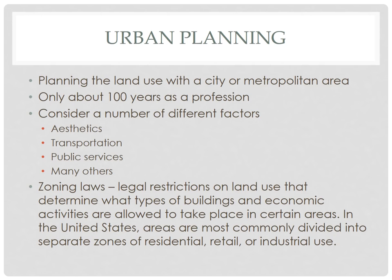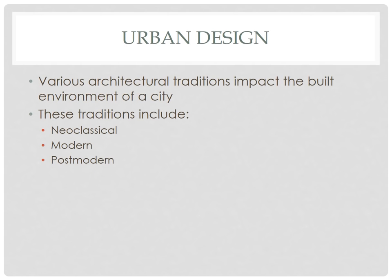This leads to one of our vocabulary terms: zoning laws — legal restrictions on land use that determine what types of buildings and economic activities are allowed in certain areas. In the United States, areas are most commonly divided into separate zones of residential, retail, and industrial use. A key question for urban planners is whether people want to live next to industrial areas.